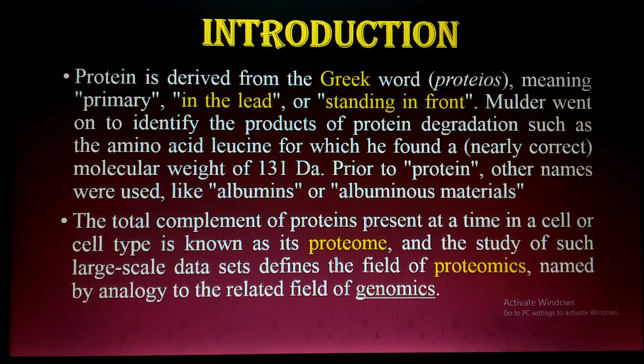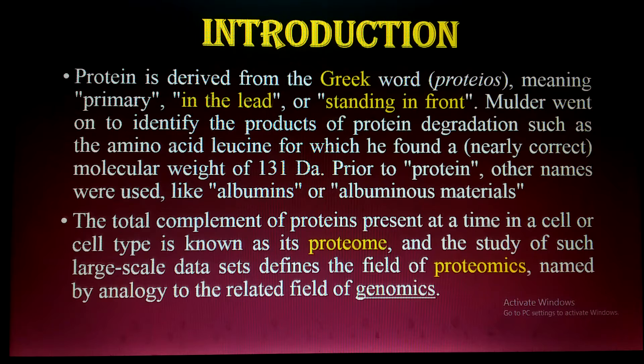First of all, what are proteins and who discovered them? The word protein is derived from the Greek word 'proteios' meaning primary. Mulder went on to identify the products of protein degradation — he was the first scientist to identify products such as the amino acid leucine, for which he named a nearly correct molecular weight of 131 Daltons.